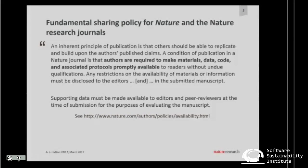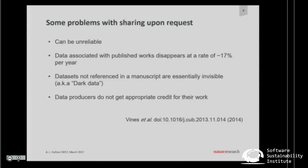We all know that upon-request sharing is not great. But this is the baseline policy — it's been in place for a long time. If you read something interesting in our journals, you have the right to email that author and say 'I would like the data.' If they don't give it to you, the editors will want to know. A lot of people don't realize they have that right — and you have this right as a reviewer as well. But sharing upon request can be unreliable. A lot of data disappears. There are good studies showing that in biological sciences, about 17% disappears per year as you go back in the literature. Once you're five years back, the chances that the email works and the postdoc is still there and knows where the file is gets really, really small.